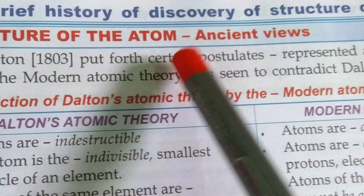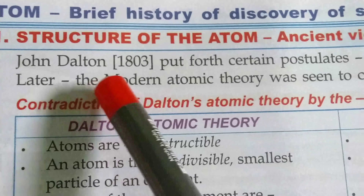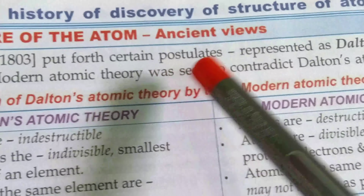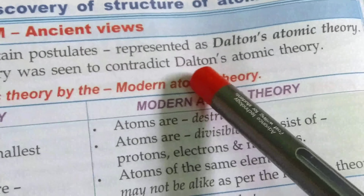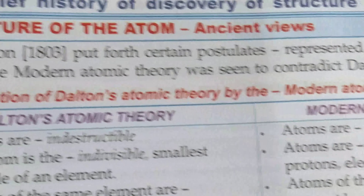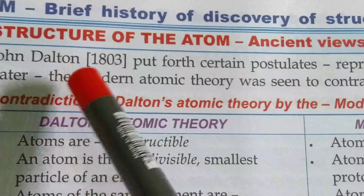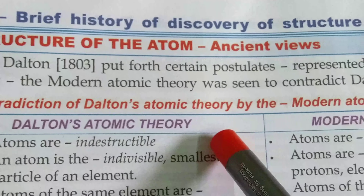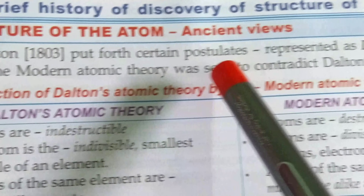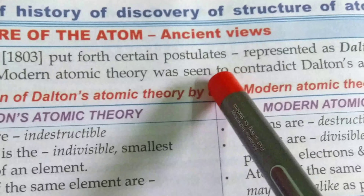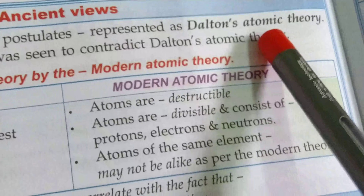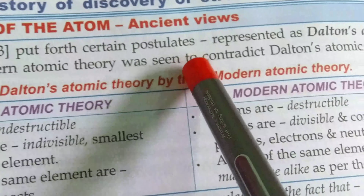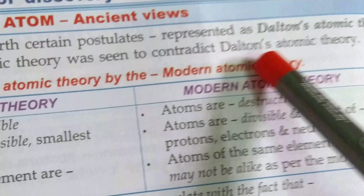Next, structure of atom and sand views. John Dalton put forth certain postulates represented as Dalton's atomic theory. Scientist John Dalton gave some postulates about atoms and atomic structure — this is also known as Dalton's atomic theory. Later, the modern atomic theory was seen to contradict Dalton's atomic theory.